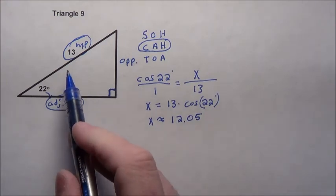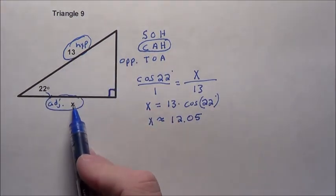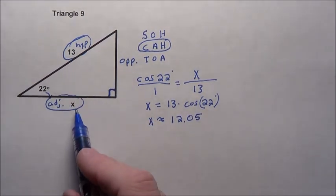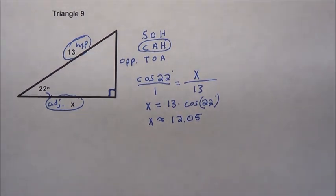In this case, that makes sense. The hypotenuse is bigger at 13. This was a small angle, so the adjacent side gets pretty close to that hypotenuse. This is 12.05 for triangle number 9.